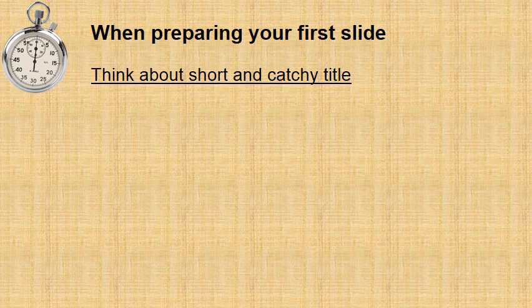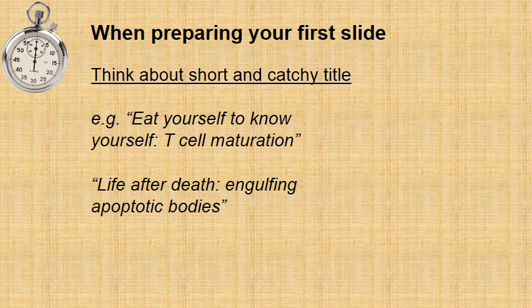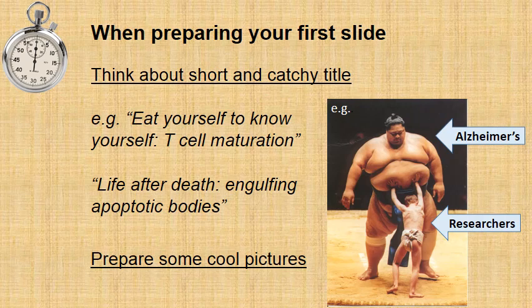When you are preparing your first slide, the first thing you need to think about is a short and catchy title. This is not a scientific paper. Long and boring titles with names of genes or proteins are just not for this. You need short stuff that will attract your audience to listen, like 'Eat Yourself to Know Yourself' or 'Life After Death.' Who would not like to know what happens after that? In addition, you need to think about good, catchy images. If you're talking about Alzheimer's disease, this picture is perfect to present the state of the research. This sticks to the brain of your audience.